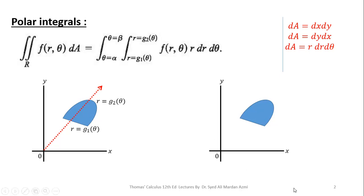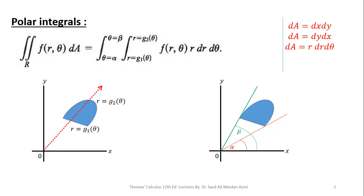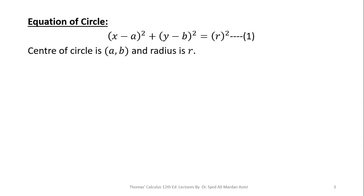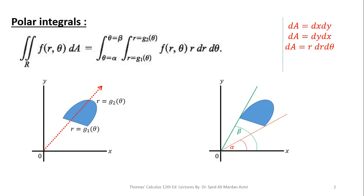Next, in order to calculate the limits of theta, we will calculate the starting angle and the ending angle of the region in counterclockwise direction with the positive x-axis. The region starts at a point whose angle is taken as alpha, and the region ends at a point whose angle is taken as beta. So the limits of theta are alpha to beta.